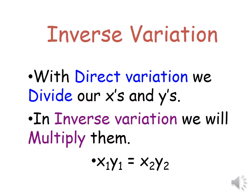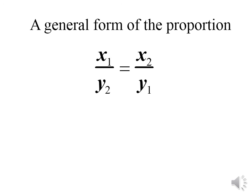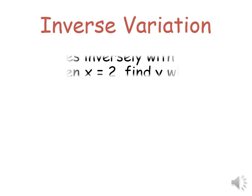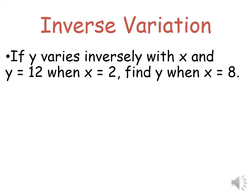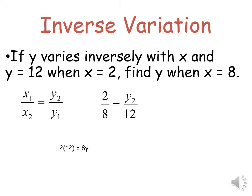In direct variation, the division is always constant. But in inverse variation, the multiplication is always constant. So x1 times y1 equals x2 times y2, which gives x1 over x2 equals y2 over y1. This is the inverse proportion. If y varies inversely as x and y equals 12 when x equals 2, find y when x equals 8. Using x1 over x2 equals y2 over y1: 2 over 8 equals y2 over 12. So 8 times y2 equals 24, giving y equals 3.